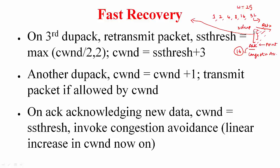Once you receive the third duplicate ACK, you retransmit the packet and cut your window by half, setting ssthresh to max of that value. Since CWND dictates how many packets you can send, you artificially inflate it by 3 to account for the 3 duplicate acknowledgements received so far — since 3 packets have been removed, you can potentially send 3 more packets, achieved by artificially inflating the window.